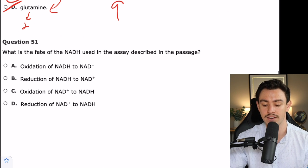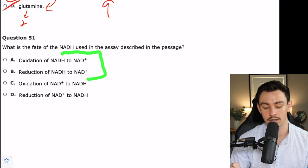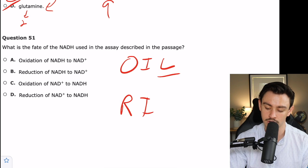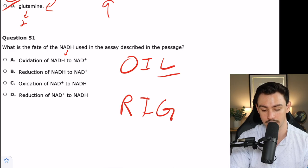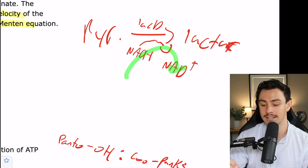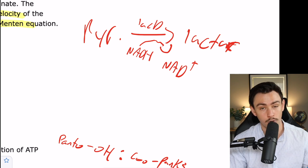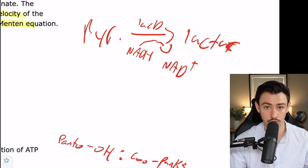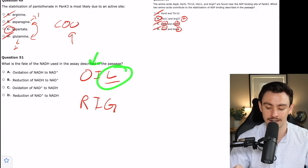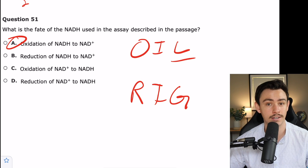And then the last one, number 51, what is the fate of the NADH used in the assay described in the passage? They're just talking about does NADH get reduced or oxidized? Remember your mnemonic OIL RIG? Oxidation is loss of electrons. Reduction is gain of electrons. So this right here would be a loss of electrons. We're going to go back and see what NADH was doing in our passage. It looks like NADH is turning into NAD+. The way that you do that is by losing electrons. If you are going to get a positively charged, protons do not move, but electrons do. So you lose electrons and that loss of a negative charge leads to a positive charge. So if we're losing electrons, then we are oxidizing. We know we're going from NADH to NAD+. So that means our correct answer is answer choice A. Thanks for watching the video. I'll see you in the next one.